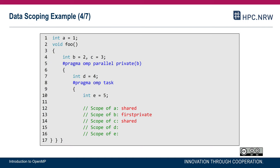Let's look at d. d is declared within the parallel region, so it's a private variable — one instance per thread. That makes it firstprivate in the task — one instance per task. Remember, firstprivate means the value is captured. And e is declared within the task, so it's not visible outside of the individual tasks. There is one task per thread within the parallel region, and each task has its own e, making it a private variable.